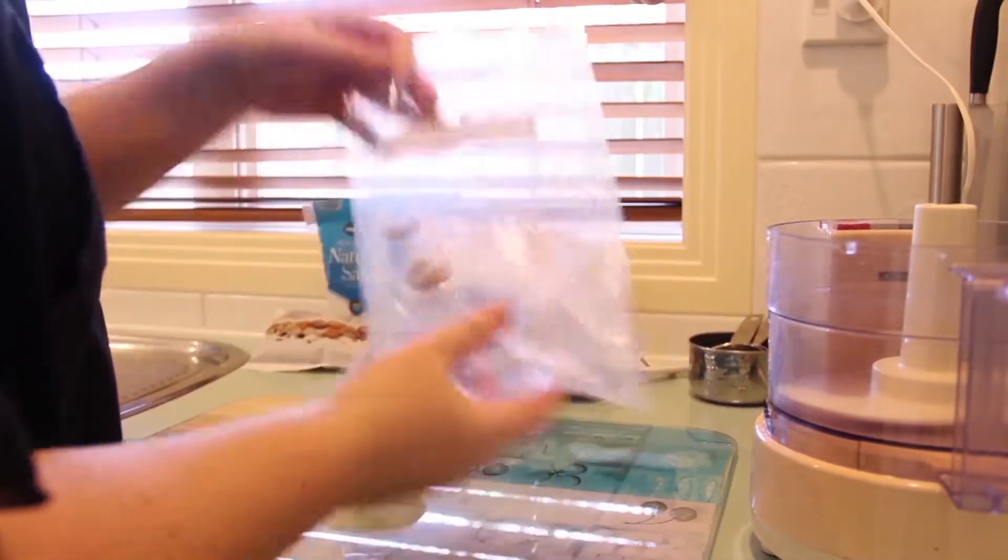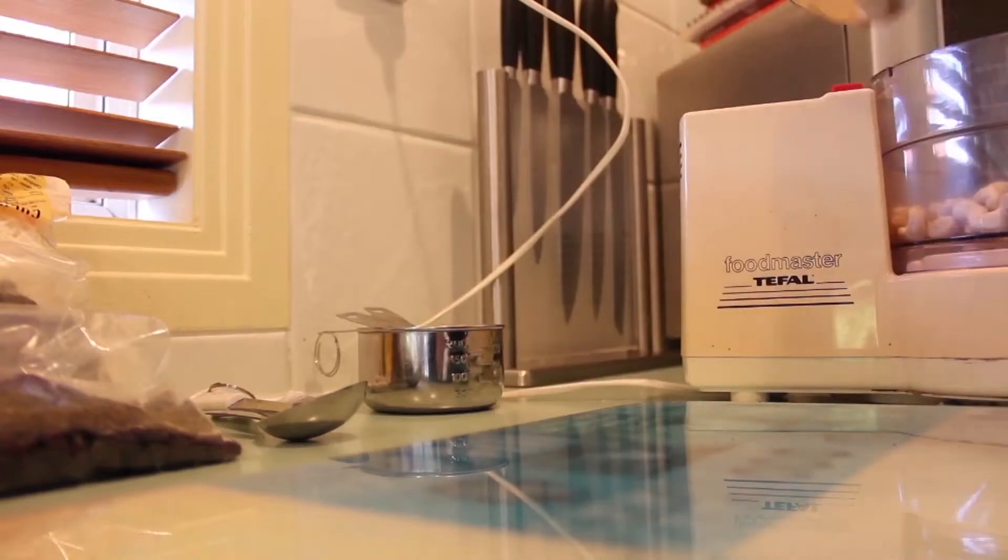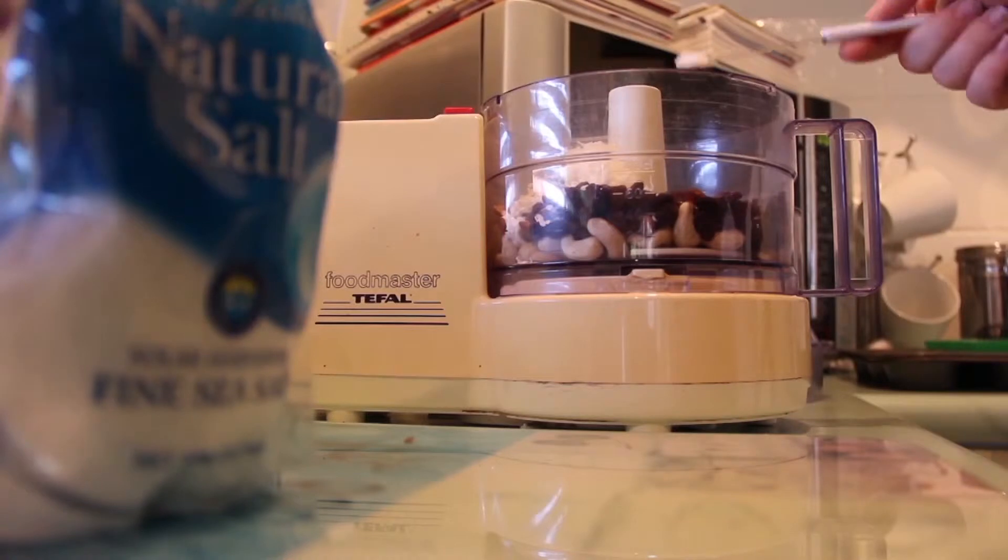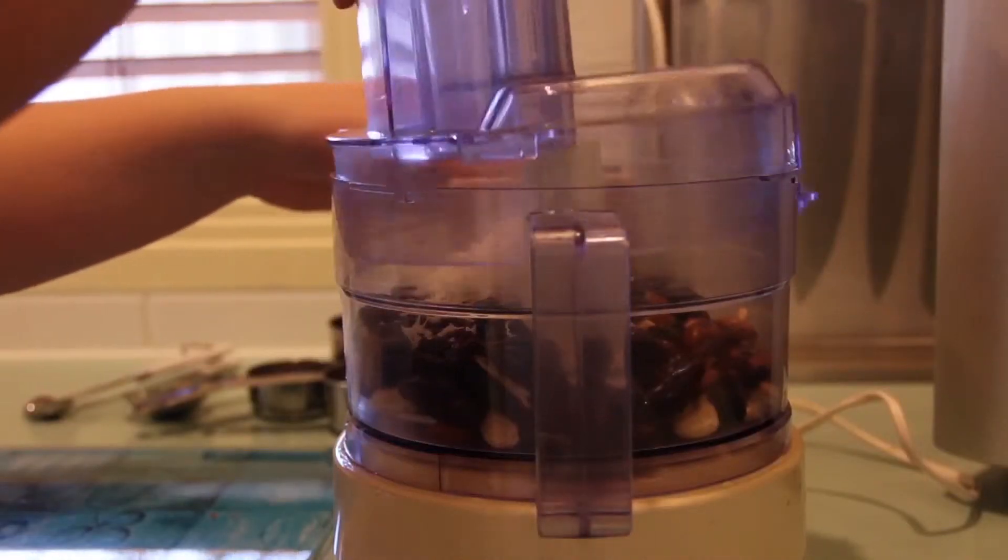You're gonna start by putting half a cup of raw almonds and raw cashews into the food processor, followed by three quarters of a cup of dates, half a cup of raisins, a quarter of a cup of shredded coconut, and a quarter of a teaspoon of sea salt. Blend this up.